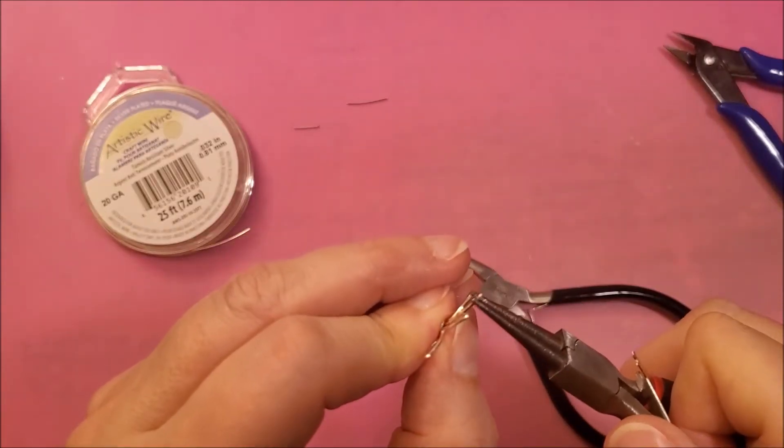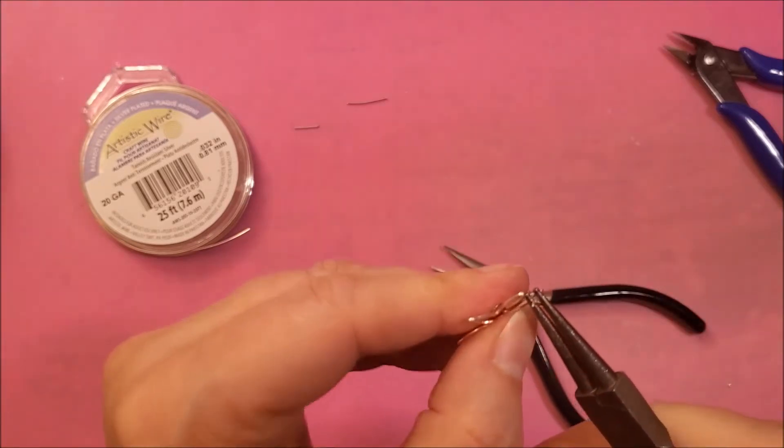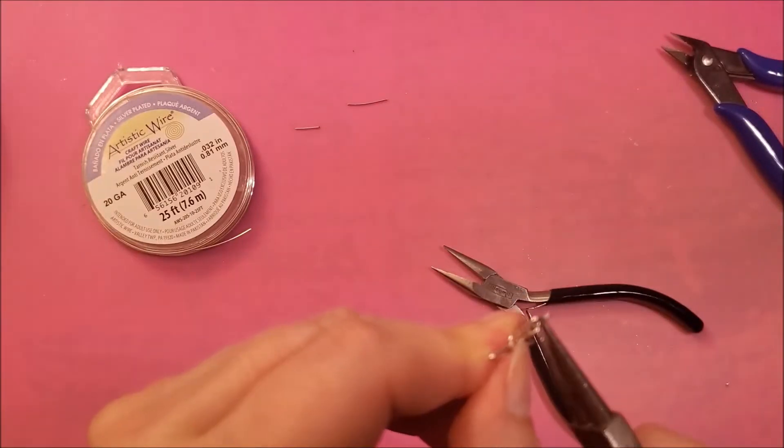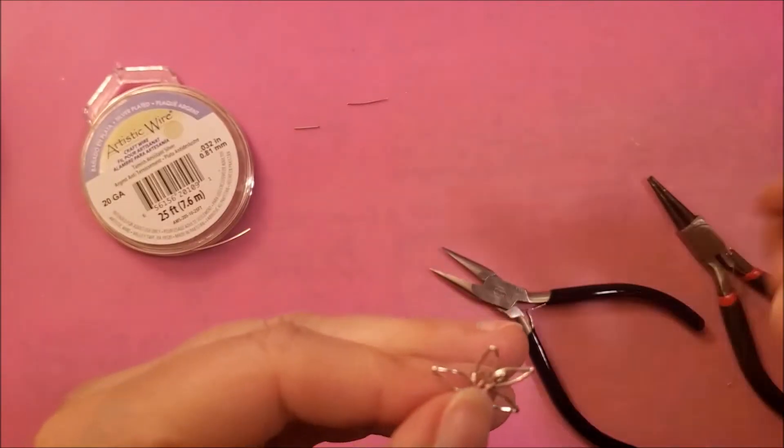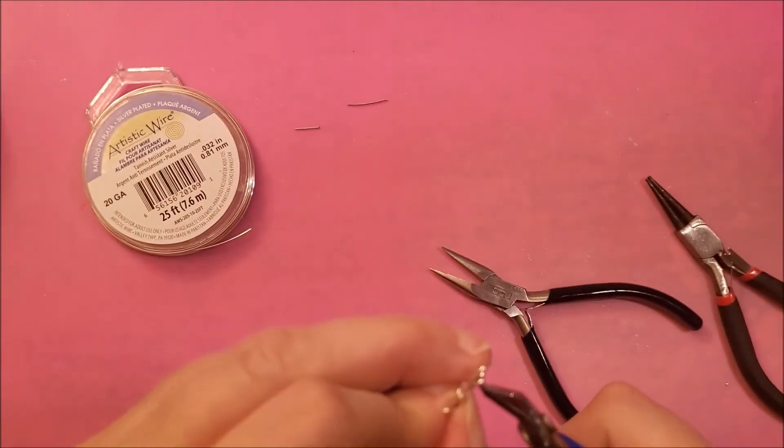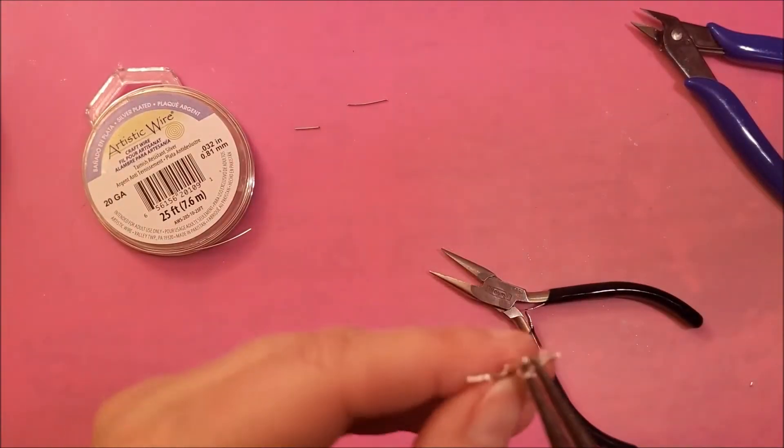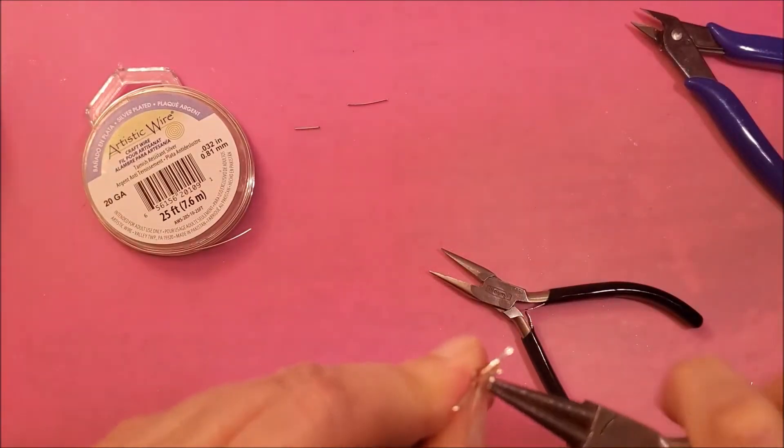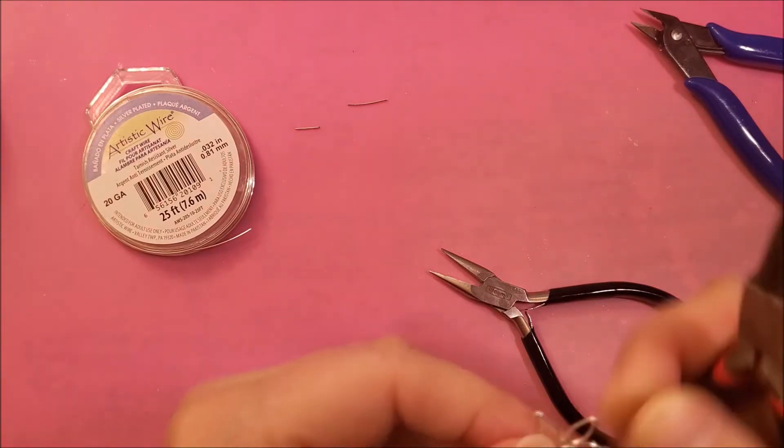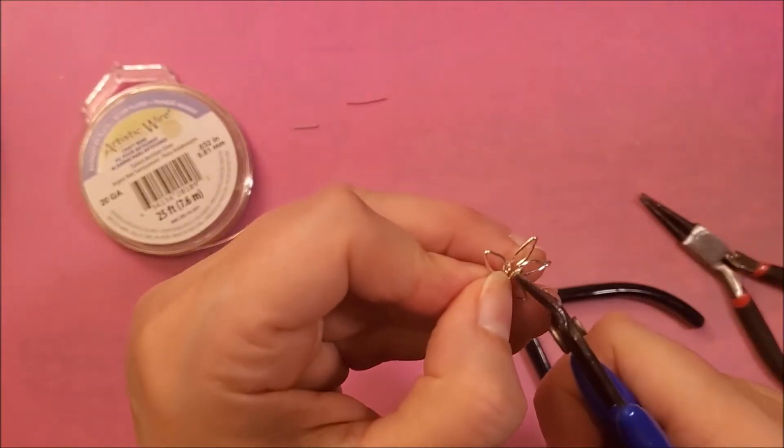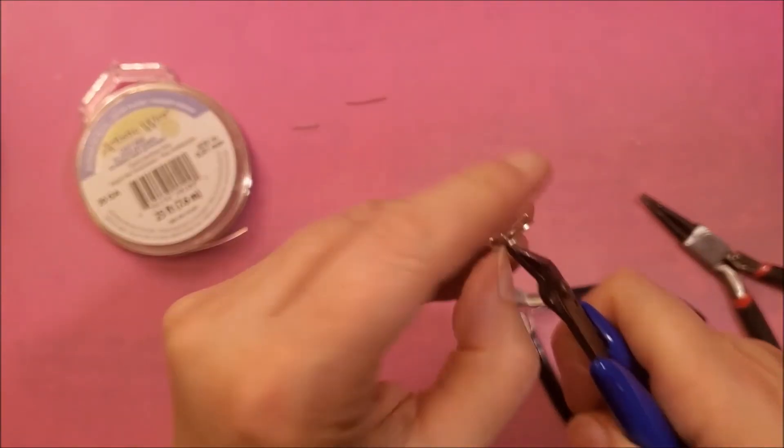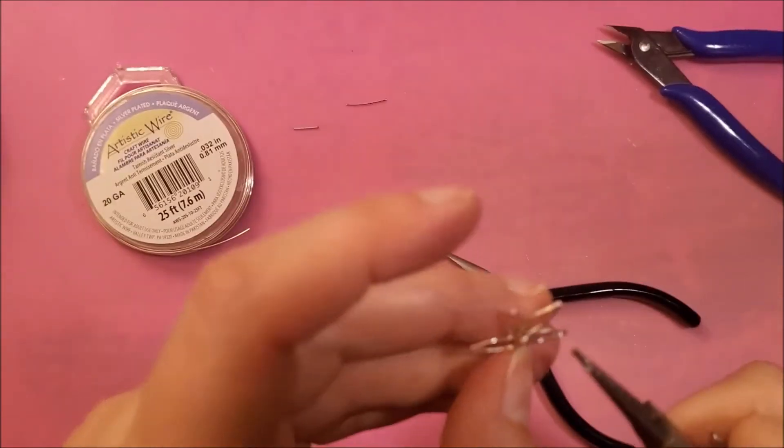Next you're going to from the center clip about maybe half an inch, we can always change it if we have to shorten it up a bit. Anywhere from a half inch to three quarters of an inch and then you can shorten it up if you have to. But we'll start with this.